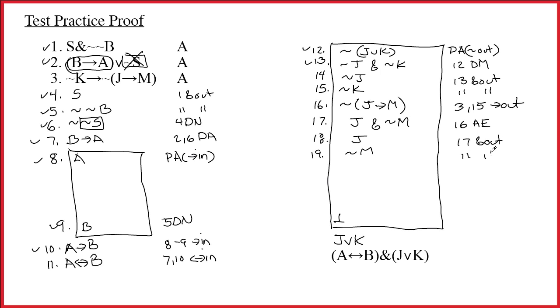And I think we're virtually done, because now you see we have j and tilde j. So, on line twenty, I will put them together. And that would be fourteen eighteen ampersand in. And having done that, twenty-one will be twelve through twenty. And that's tilde out. And now, I am finished with the entire proof.